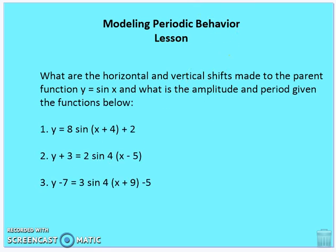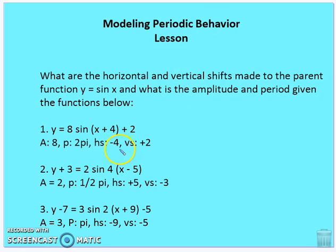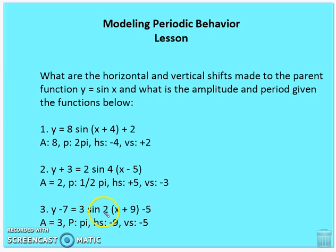Now we're going to add in amplitude and period. Problem 1: amplitude is 8, period is 2 pi over 1 = 2 pi, horizontal shift is negative 4 (or 4 to the left), vertical shift is plus 2. Problem 2: amplitude is 2, period is 2 pi over 4 = one half pi, horizontal shift is to the right 5, vertical shift is down 3. Problem 3: amplitude is 3, period is 2 pi over 2 = pi, horizontal shift is 9 to the left, and the vertical shift is plus 2 after adding 7 to both sides.